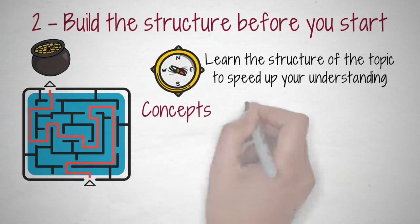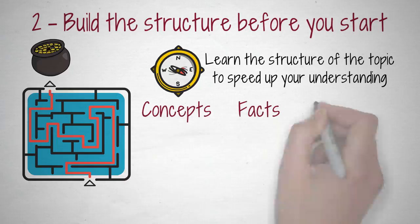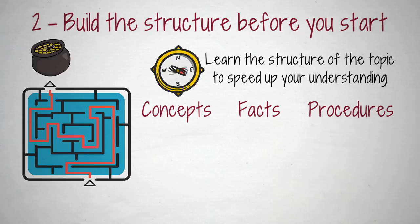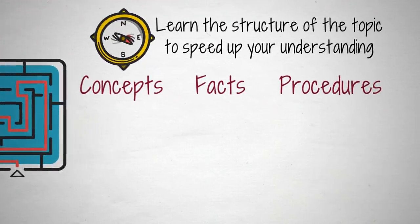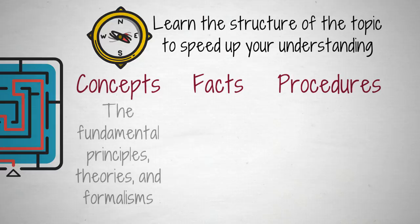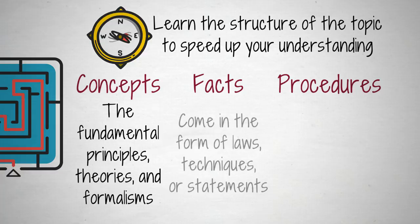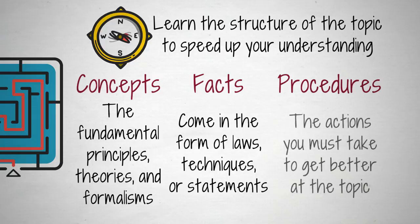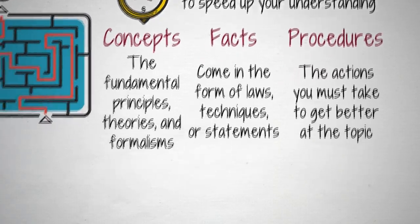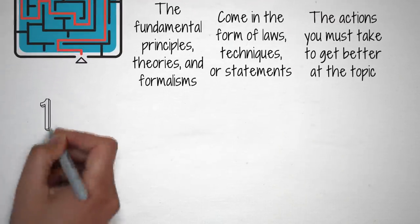To do so, create a table with three columns — concepts, facts, and procedures. Concepts are the things you need to understand the topic. They are the fundamental principles, theories, and formalisms. Facts are truthful things that you must know and remember about the topic. They come in the form of laws, techniques, or statements. Procedures are all the actions you must take to get better at the topic. They increase your skill level and practical knowledge.